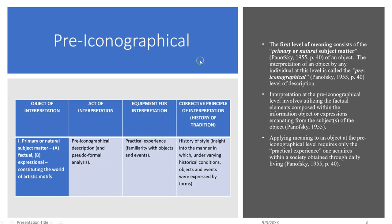We'll discuss this with the pre-iconographical, or first level of description, according to Panofsky — the primary or natural subject matter of a museum object. This is the interpretation of any object by any individual, and at this level it's called the pre-iconographical. When we're talking about the interpretation of a museum object at the pre-iconographical level and utilizing factual elements, we're talking about two different types of description: one based upon written text and the other about imagery.